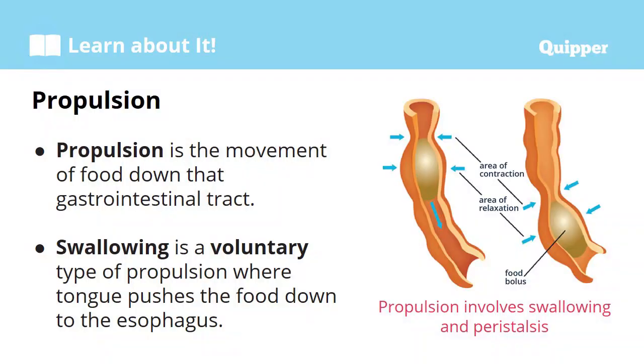Now, we're done with ingestion. Once food is swallowed and has finished in the mouth region or oral cavity, we go to the second part of the digestive process, which we call propulsion. Propulsion happens when food is already in the esophagus. Your esophagus is actually a long tube. This helps your food — or what you call your bolus — as it pushes food from the mouth down to your stomach.